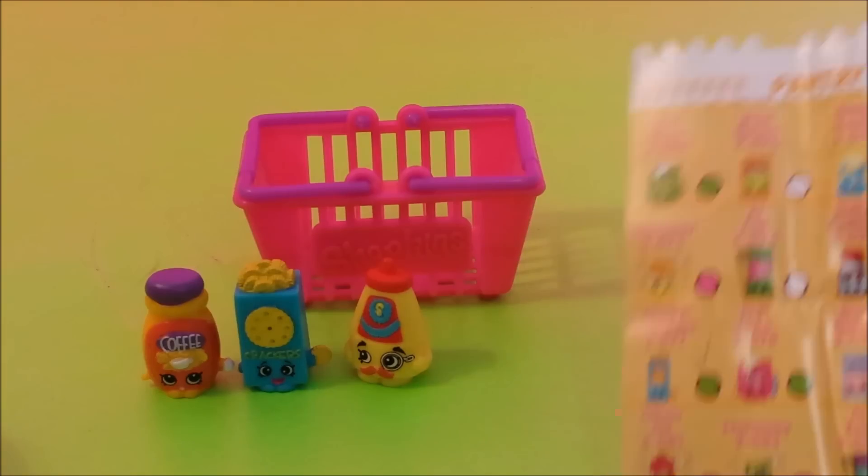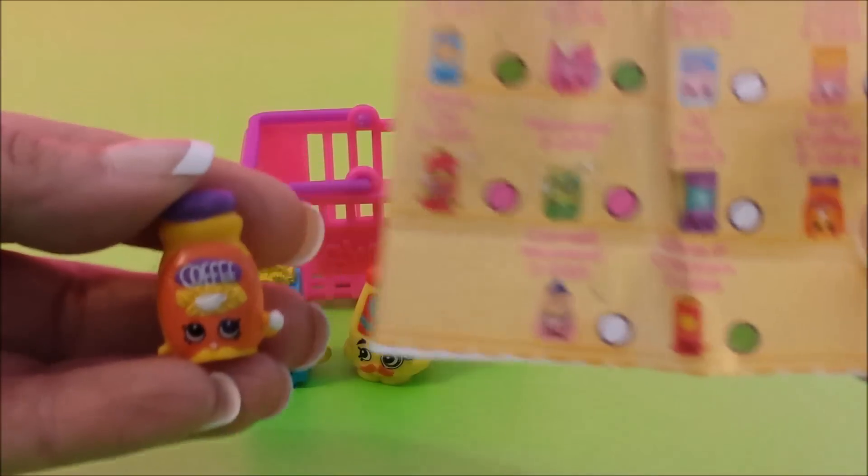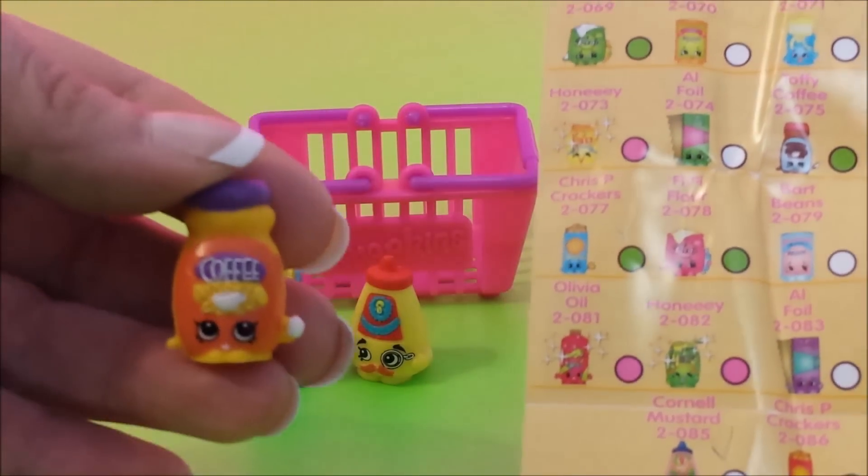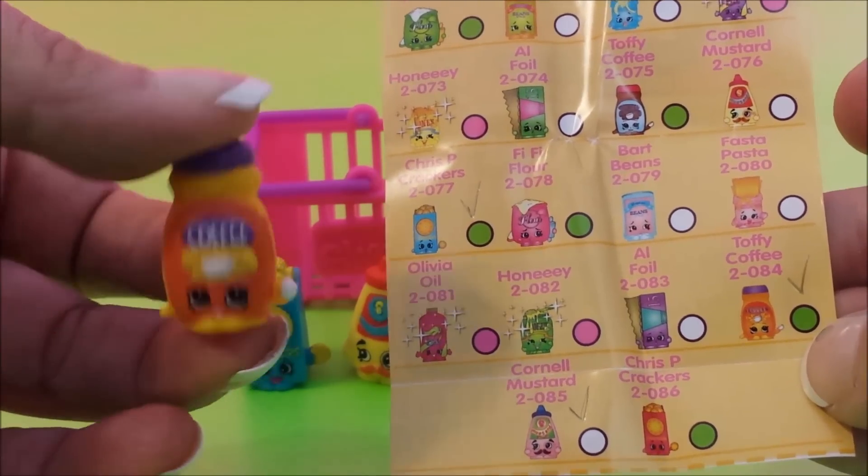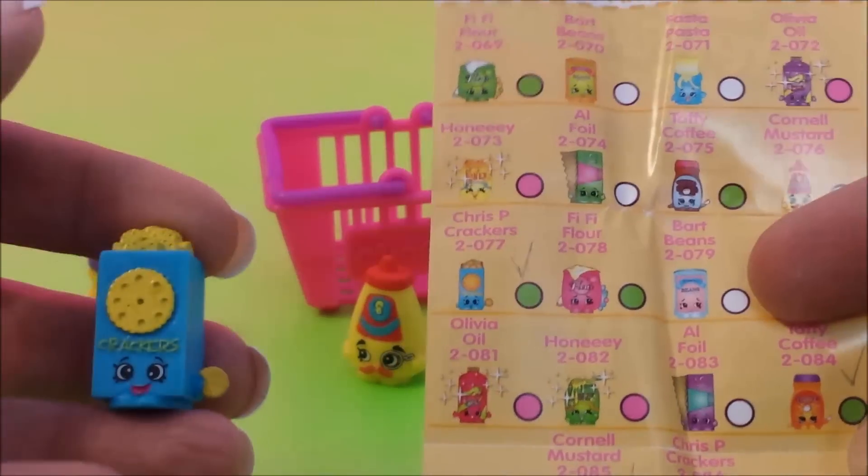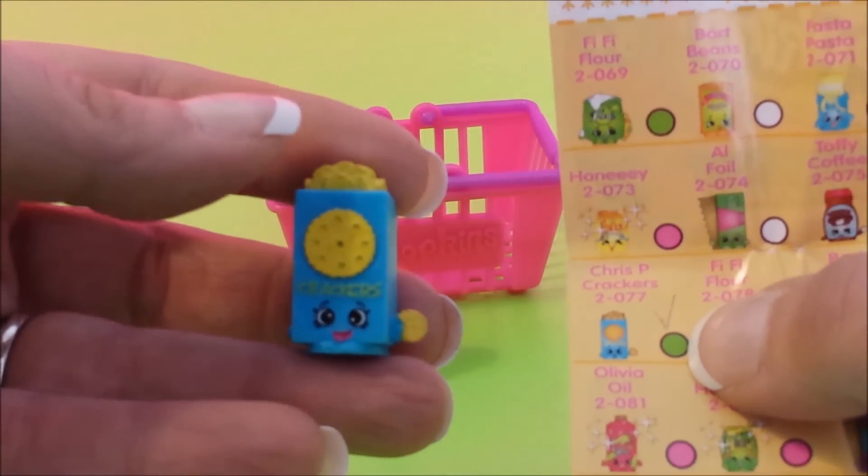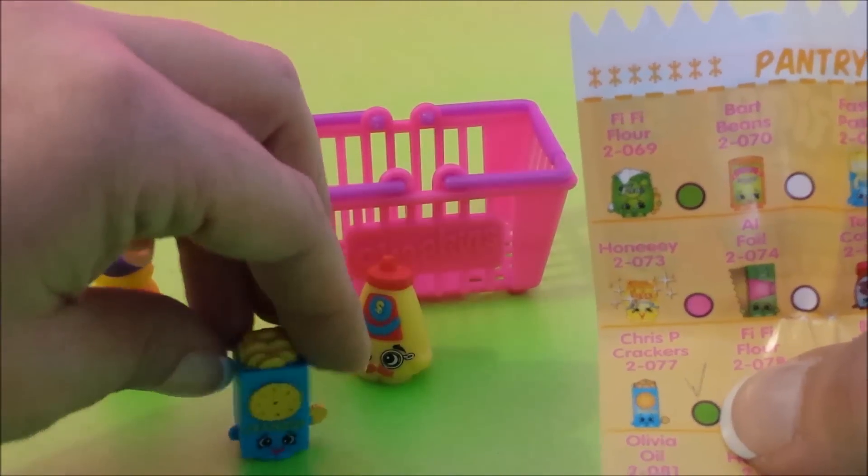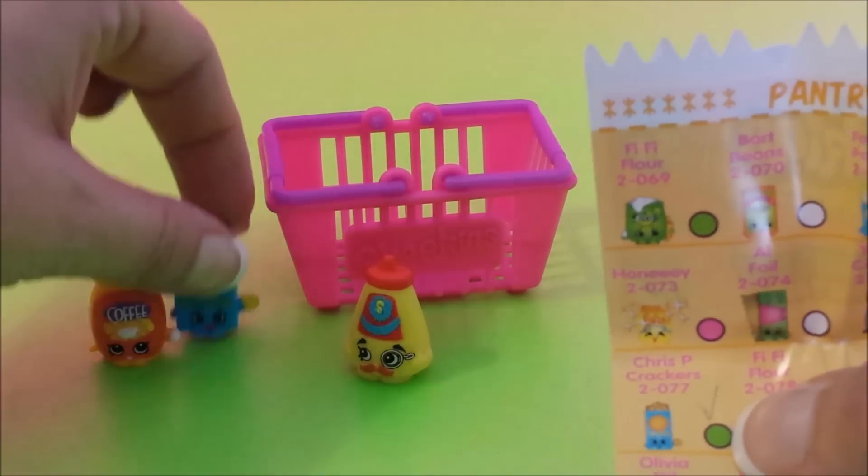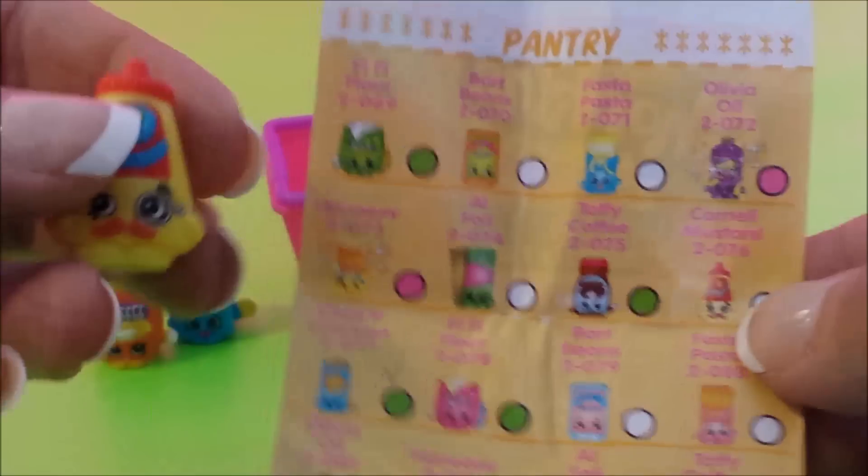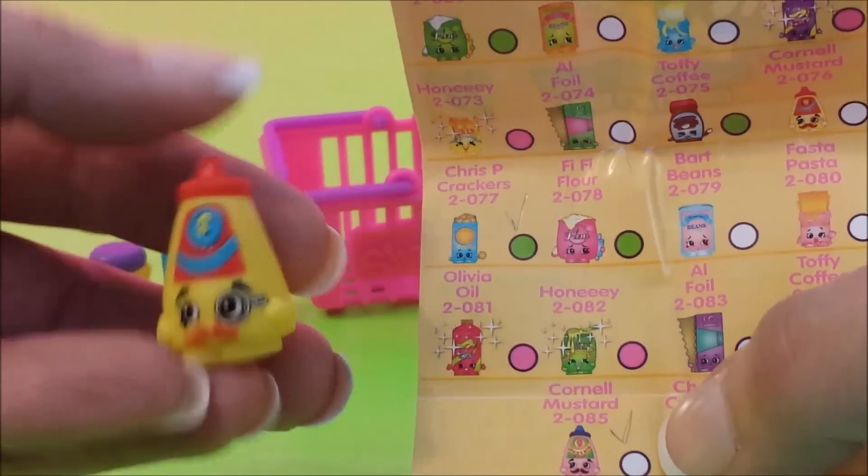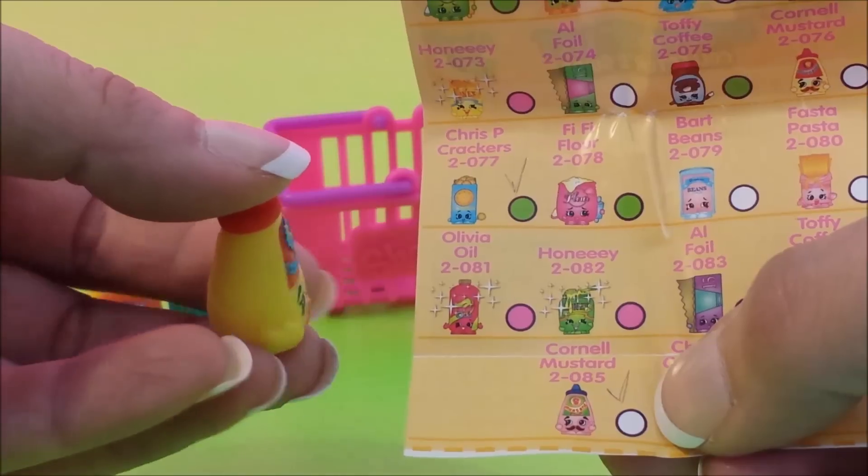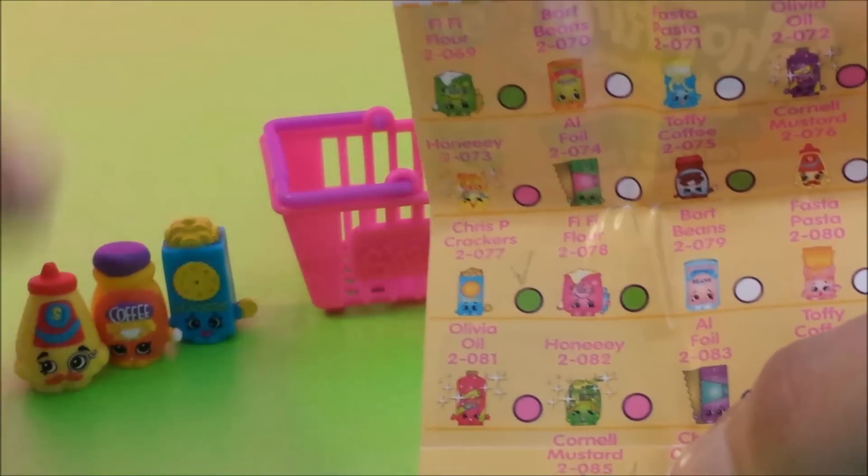Next basket we have is from the pantry. Our first Shopkin that we got is Toffee Coffee and Toffee Coffee is a rare. As you can see right here that's Toffee Coffee. The next one we have is Chris Crackers and Chris Crackers is also a rare. It's right here on the list. Next one on our list is Colonel Mustard and this one is right here and it is a common.